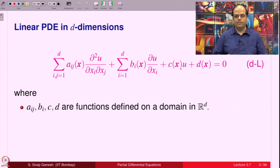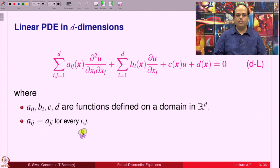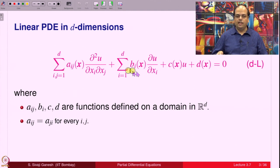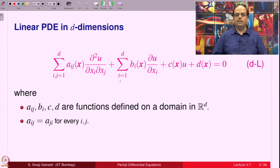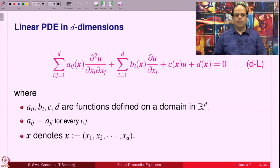We must place assumptions on the coefficients. We assume a_ij, b_i, c, and d are functions of x defined on a domain in R^d, and for simplicity assume they are continuous. Most importantly, we assume a_ij = a_ji, because a_ij is the coefficient of ∂²u/∂x_i∂x_j, and if we expect a twice continuously differentiable solution, then ∂²u/∂x_i∂x_j equals ∂²u/∂x_j∂x_i, so we can always make the matrix symmetric.